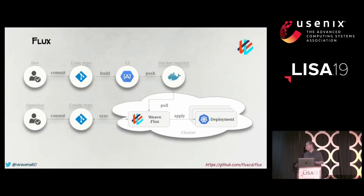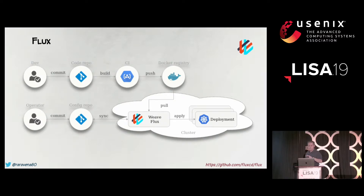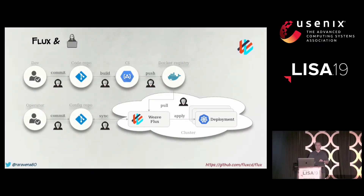Looking at the Flux workflow diagram: either a developer or cluster operator can initiate deployments. The developer does a commit, kicks off a build, and pushes to a Docker registry. Then the Weave Flux controller automatically deploys to a Kubernetes cluster. Alternatively, a cluster operator modifies a configuration repo containing something like an image tag, and that change is automatically identified by the Weave Flux controller and deployed. But remember, you have all these points where you're syncing and pushing, so you might be exposed to an attacker.